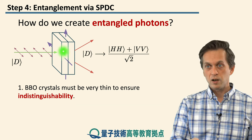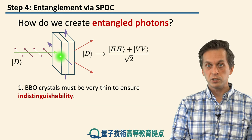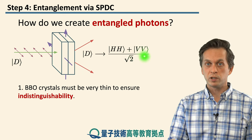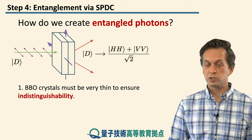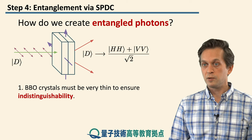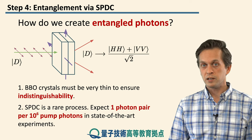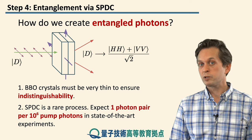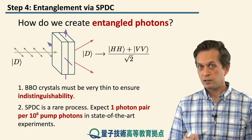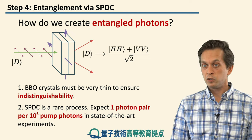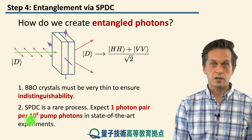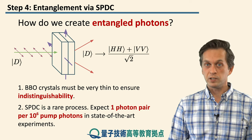If, however, we can actually tell where the two photons originate from, then we will only get horizontally polarized photons or vertically polarized photons, and there will be no entanglement shared between these two photons. Another important property of SPDC is that it's an extremely rare process. We obtain only about one photon pair per 10^6 pump photons, and that's only in state-of-the-art experiments. Usually this number — 10^6 pump photons — is orders of magnitude higher in commercially available lasers.